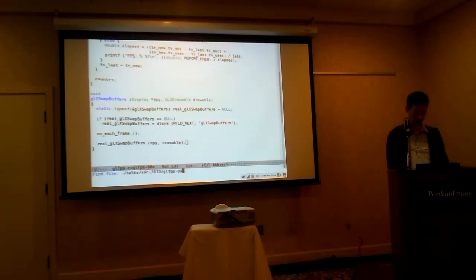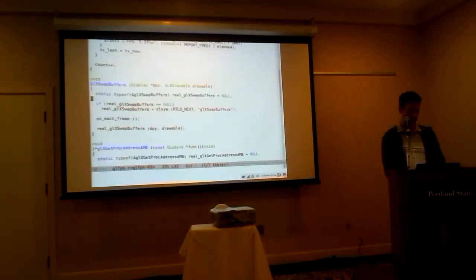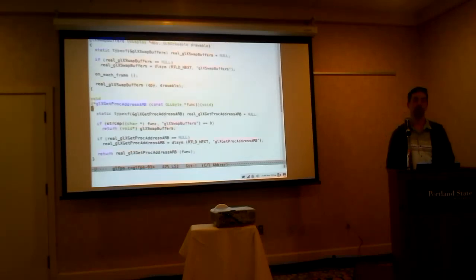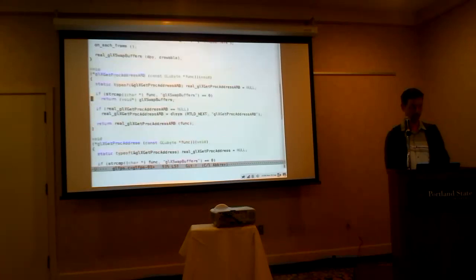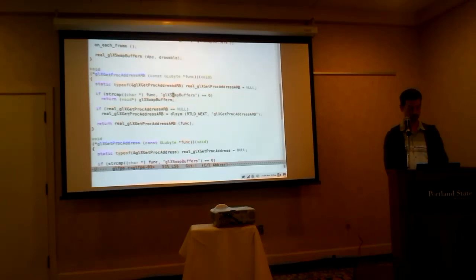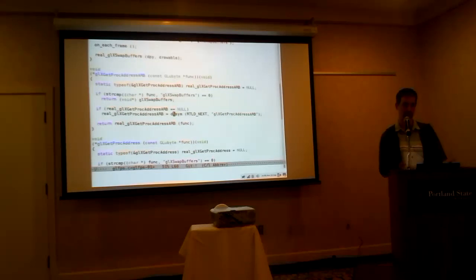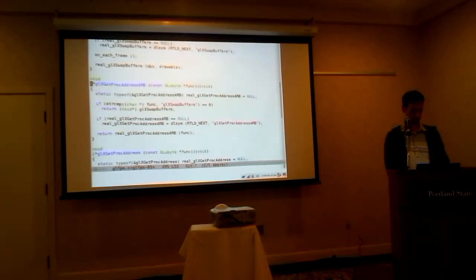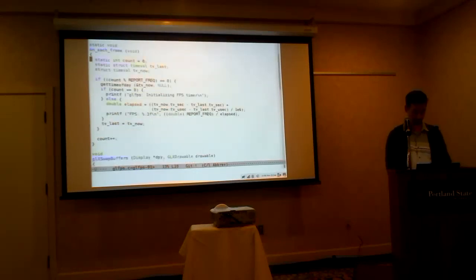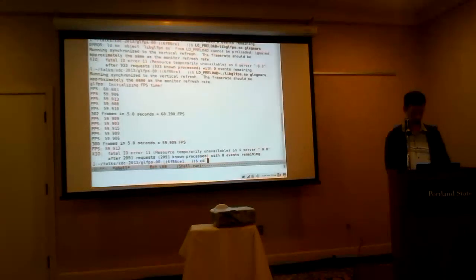So I can do version two — I've added my own wrapped implementation of GLX get proc address. Now when the application calls GLX get proc address, I look at it and say: if they're trying to do a get proc address of GLX swap buffers, I want to return mine. Otherwise, I go ahead and look up with dlsym the real GLX get proc address and defer down to that. Of course GLX get proc address comes in two flavors — with the ARB suffix or not. My program got about twice as long, but it should still work.